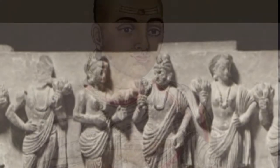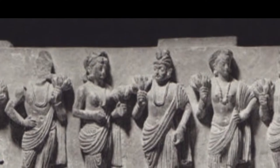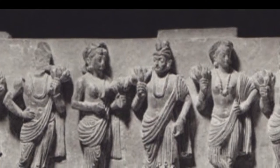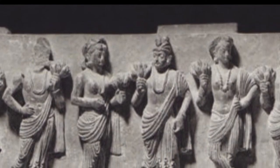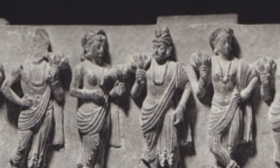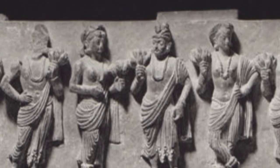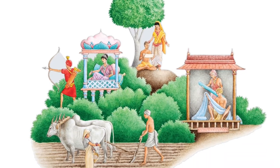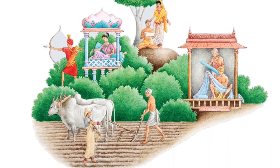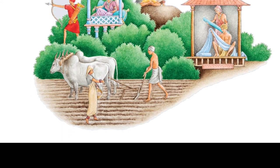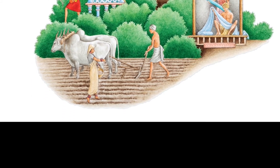The Aryans, who created the caste system, arrived around 1500 BCE. They based the system off of the Manusmriti. The Manusmriti was a book of Hindu law and is one of the oldest theocratic books in ancient history.